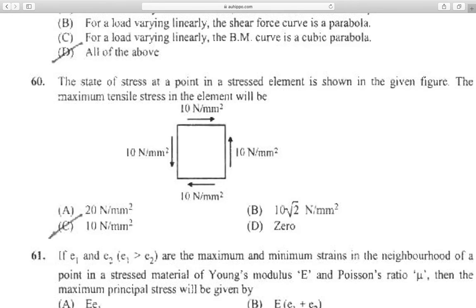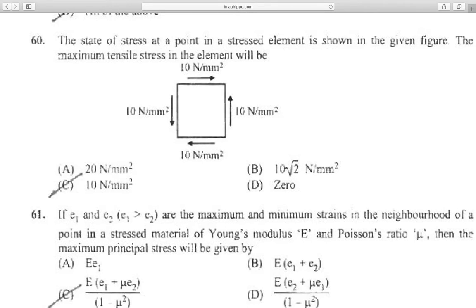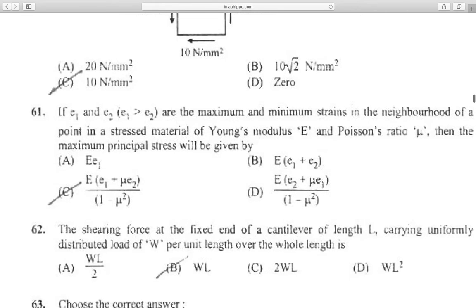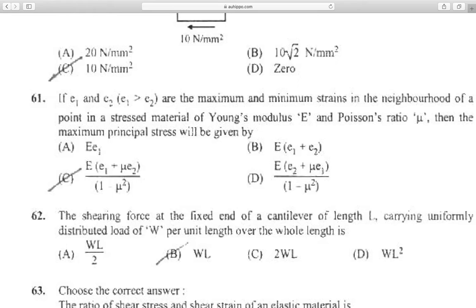Question 60: The state of stress at a point in a stressed element is shown in the given figure. The maximum tensile stress in the element will be 10 N per mm square. Question 61: If E1 and E2, where E1 is greater than E2, are the maximum and minimum strains in the neighborhood of a point in a stressed material of Young's modulus E and Poisson's ratio mu, then the maximum principal stress will be given by E times E1 plus mu E2, divided by 1 minus mu square.